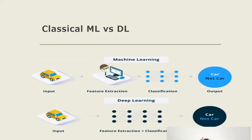Now, talking about the difference between classical machine learning and deep learning — in classical machine learning, we manually extract the features. All the techniques I have shown you are usually used for classical machine learning, where we handcraft the features using manual techniques.